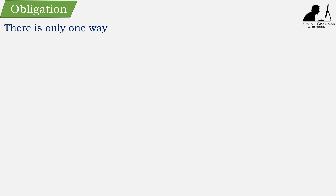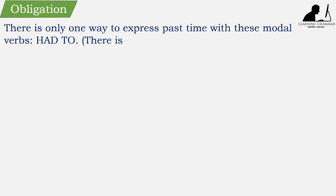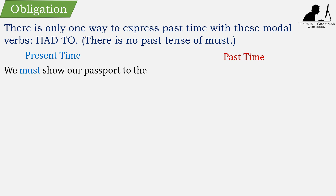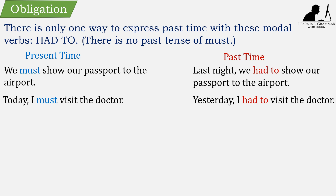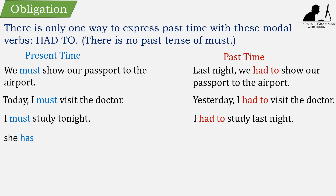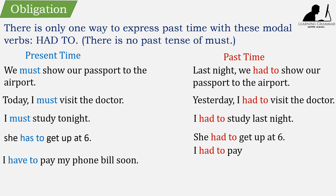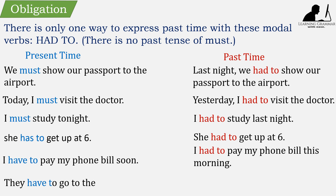There is only one way to express past time with these modal verbs: 'had to.' There is no past tense of 'must.' For example: 'We must show our passport at the airport' becomes 'Last night, we had to show our passport at the airport.' 'Today, I must visit the doctor' — 'Yesterday, I had to visit the doctor.' 'I must study tonight' — 'I had to study last night.' She has to get up at 6 — she had to get up at 6. I have to pay my phone bill soon — I had to pay my phone bill this morning. They have to go to the meeting today — they had to go to the meeting yesterday.